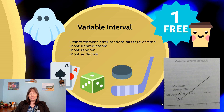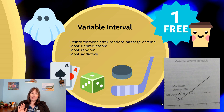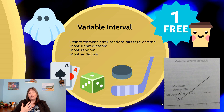Looking at the variable interval graph, it's neither too vertical nor too horizontal — it's a steady, linear rate. People continue doing the behavior at a consistent pace because it feels so random that they'll keep doing it as much as they enjoy the behavior.